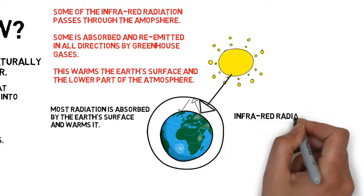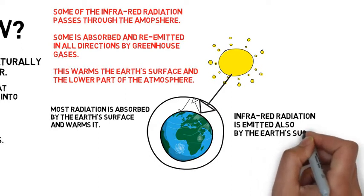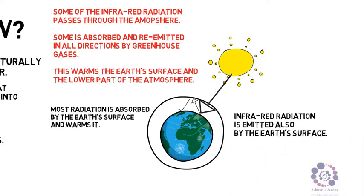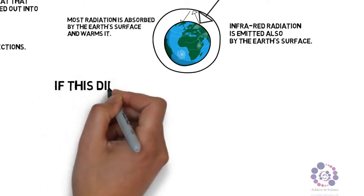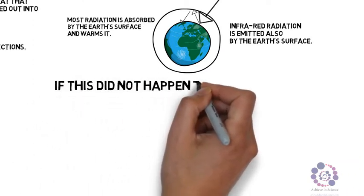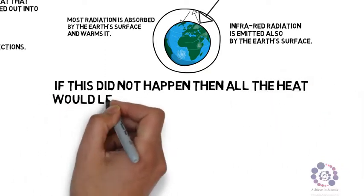Infrared radiation is emitted also by the earth's surface. If this didn't happen, all the heat would leave at night and we would just get too cold. Too cold to be able to actually live on earth.